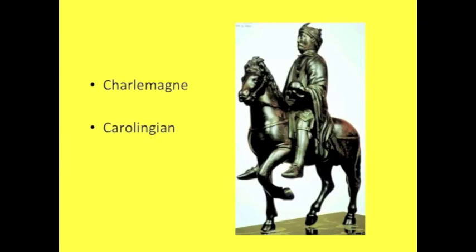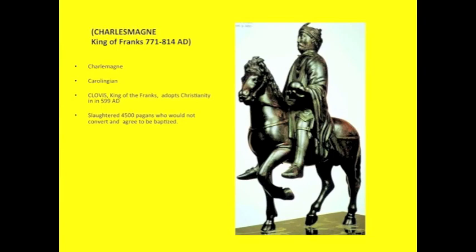Today we're going to talk about Charlemagne and the architecture of Europe in the Middle Ages. Charlemagne descends through Pepin from a line of Frankish kings. Back in 599 AD, Clovis, king of the Franks, adopted Christianity. Charlemagne was very adamant about enforcing the spread of Christianity throughout the territories he conquered. On one occasion, he slaughtered 4,500 pagans who would not convert. If you wonder why nobody's worshiping Zeus and Athena anymore, Charlemagne is probably more responsible for that than most historical figures.